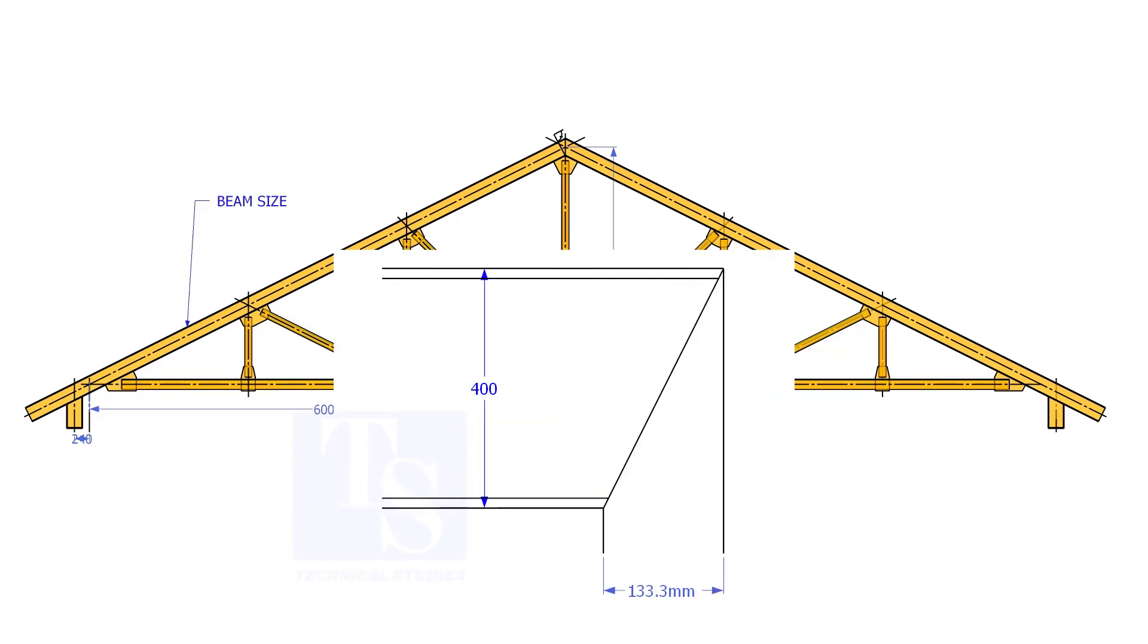Proportionate to the span and the height, the cutback for a 400 mm wide beam is 133.3 mm.